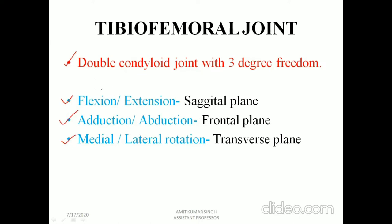Flexion and extension take place in the sagittal plane, which divides the body into right and left halves. Adduction and abduction take place in the frontal plane, which divides the body into anterior and posterior halves. Medial and lateral rotation take place in the transverse plane, which divides the body into top and bottom halves.